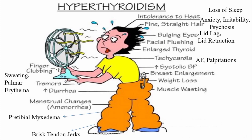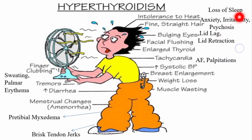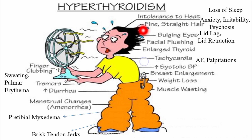The most common signs and symptoms of hyperthyroidism, starting from the CNS, include anxiety, irritability, psychosis, lack of sleep, and intolerance to heat — the person cannot survive in the heat. There is fine straight hair. Regarding the eyes, they are usually bulging, which is one of the characteristic signs of hyperthyroidism, and this is called exophthalmos.